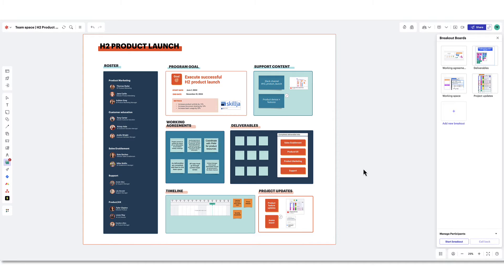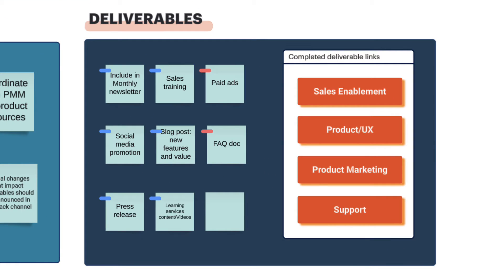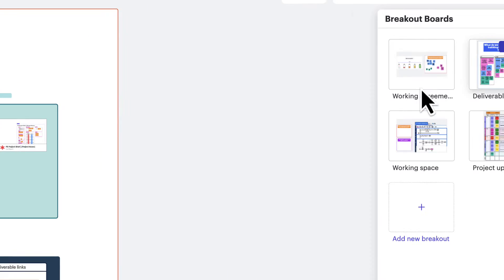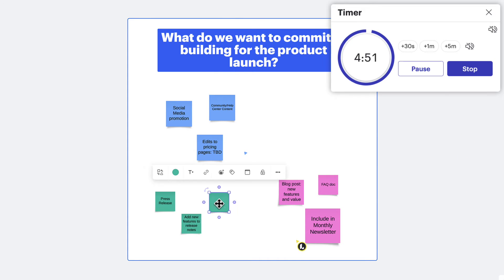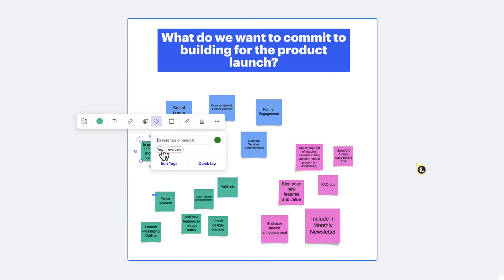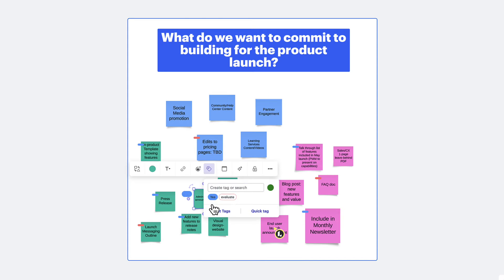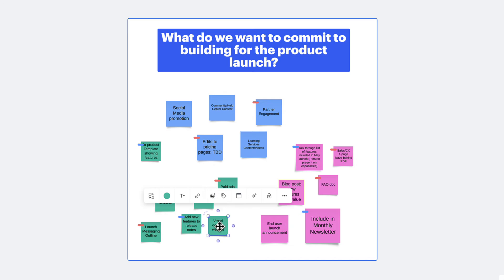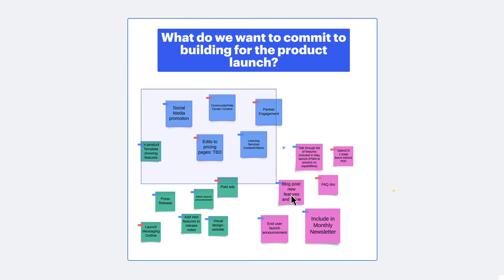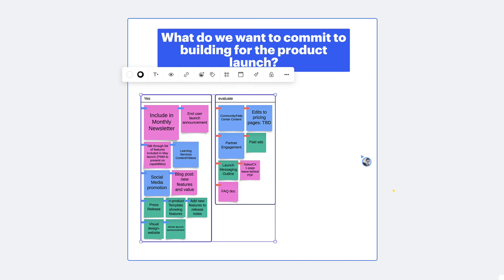Have the team vote for their top 5 and then copy and paste those to the main board for easy reference. Revisit these working agreements with the team during your meetings to ensure things are working smoothly. The deliverables section gives visibility to what everyone is actually building and committing to. During your first team sync, take 5–10 minutes for the team to ideate on deliverables in another breakout board. Then tag all the ideas that the team knows are impactful and can easily be delivered with a yes.